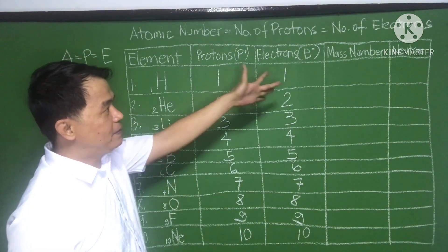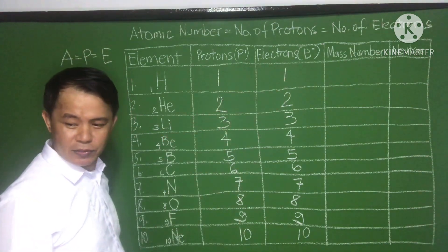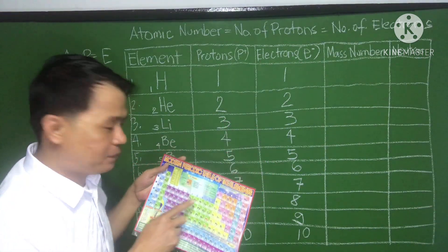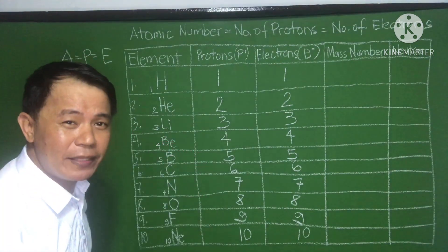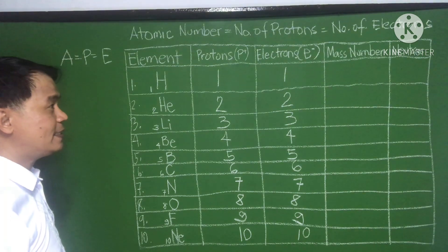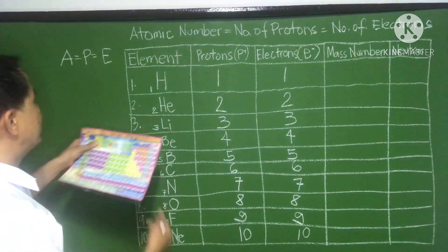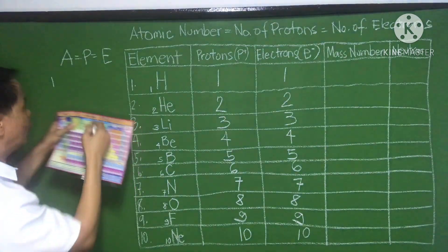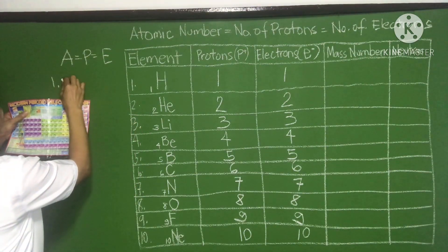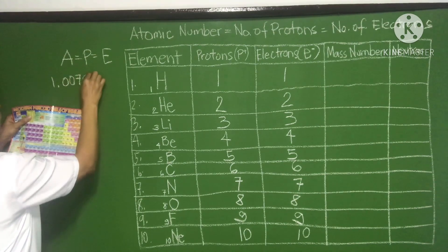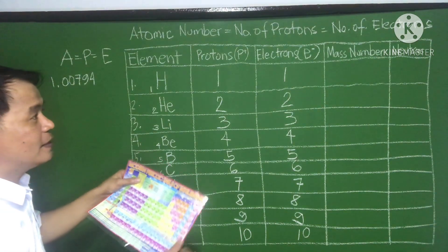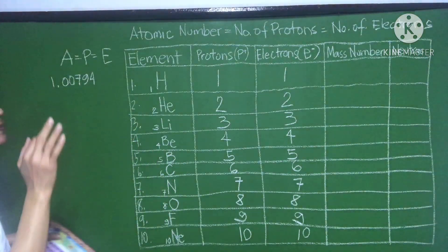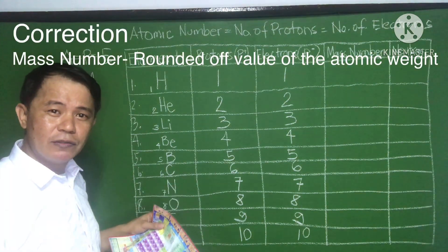Now, the only problem is the mass number and the neutrons. If you look at the periodic table, there is what we call the atomic weight, and it is in decimal form. For example, hydrogen has an atomic weight of 1.0079. The mass number is the rounded-off value of the atomic weight.